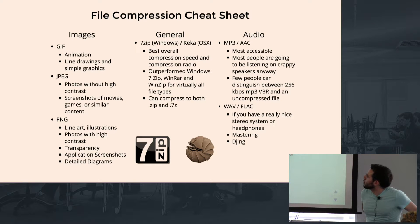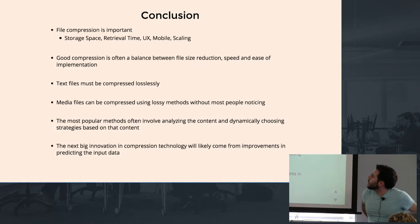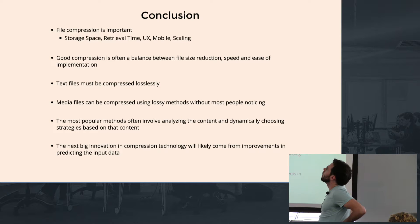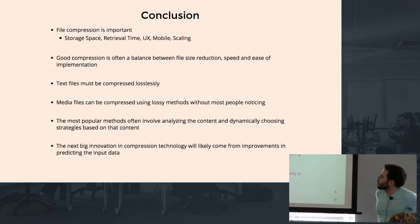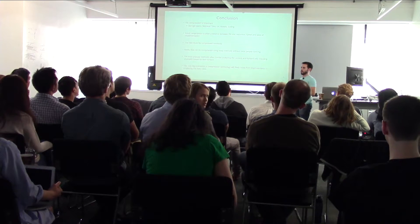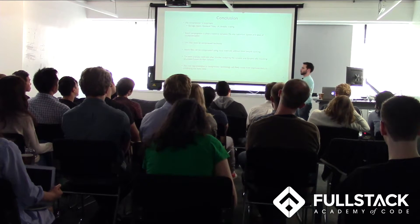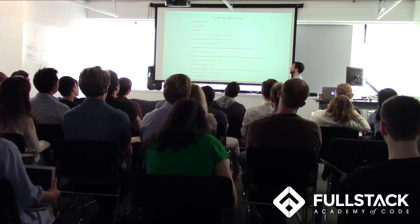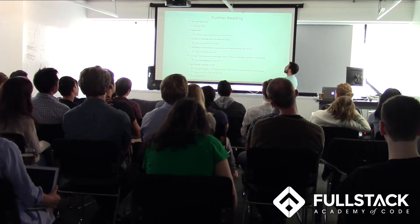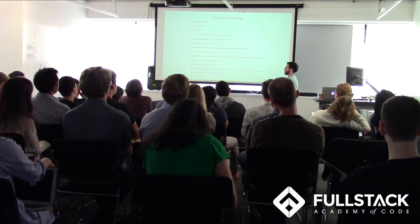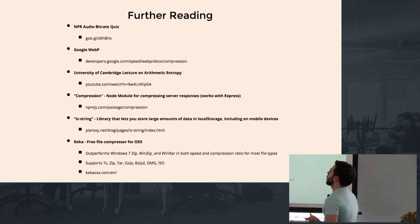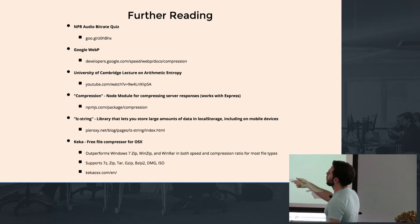Here's a quick cheat sheet about which types of files to use for different types of content, and here are some resources you can check out. There's a compression Node module that works with Express and can compress your server responses in your back end. There's also a library that lets you store large amounts of data in local storage by compressing them. Kika is a really good file compressor for Mac.